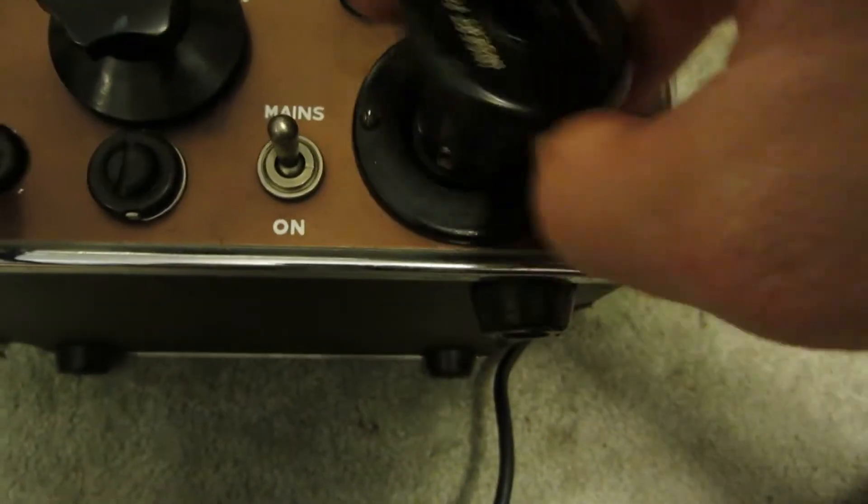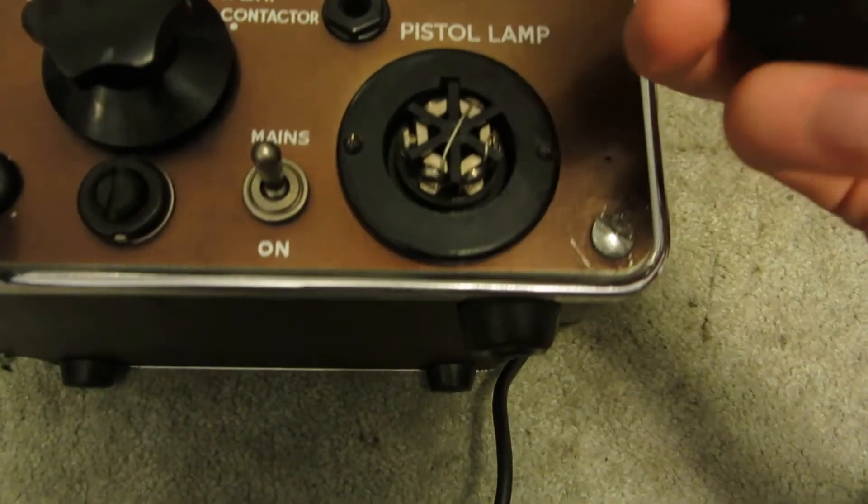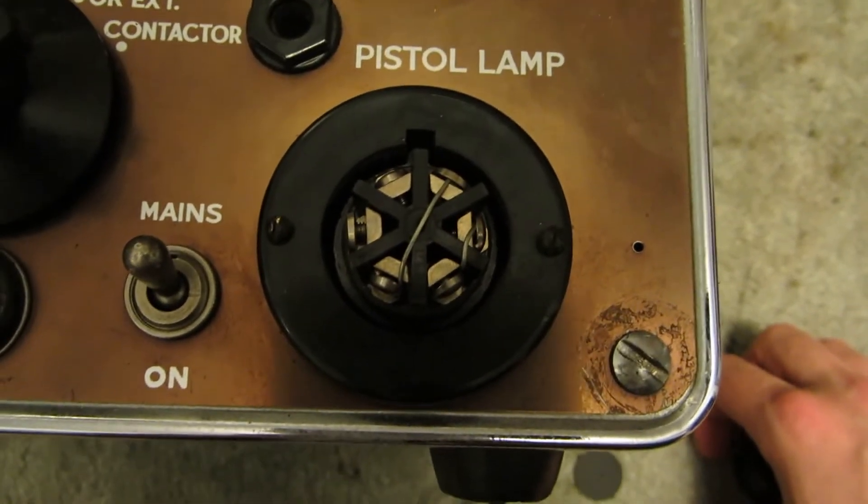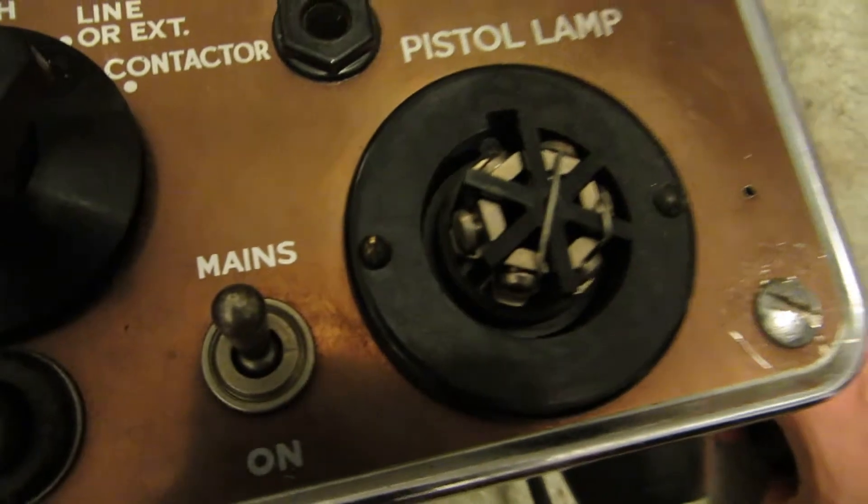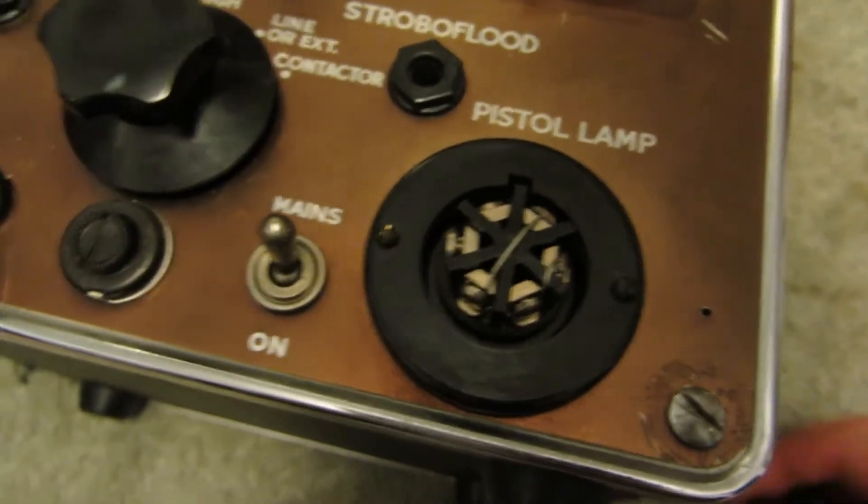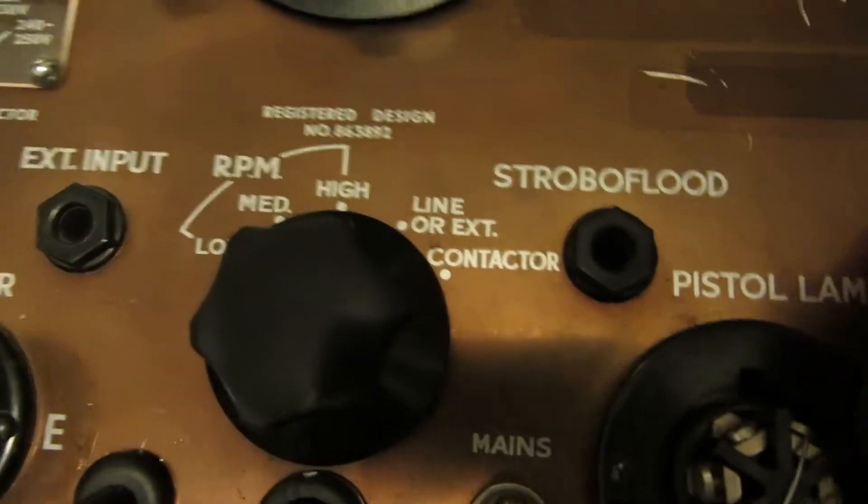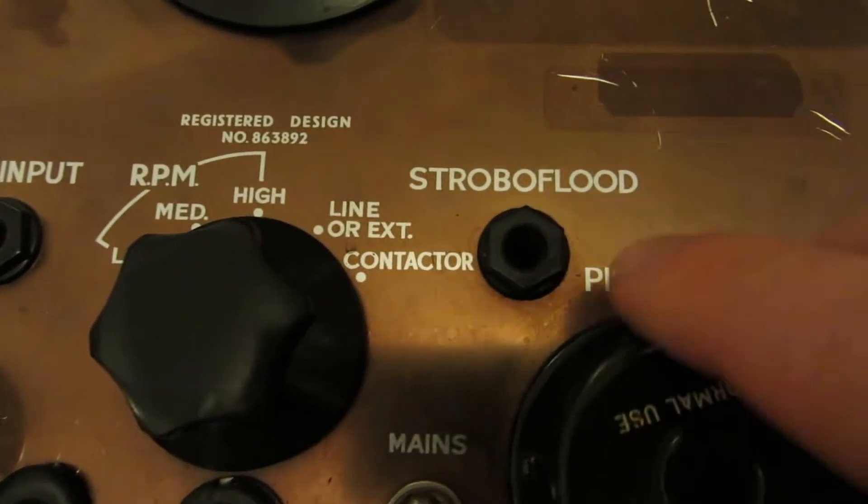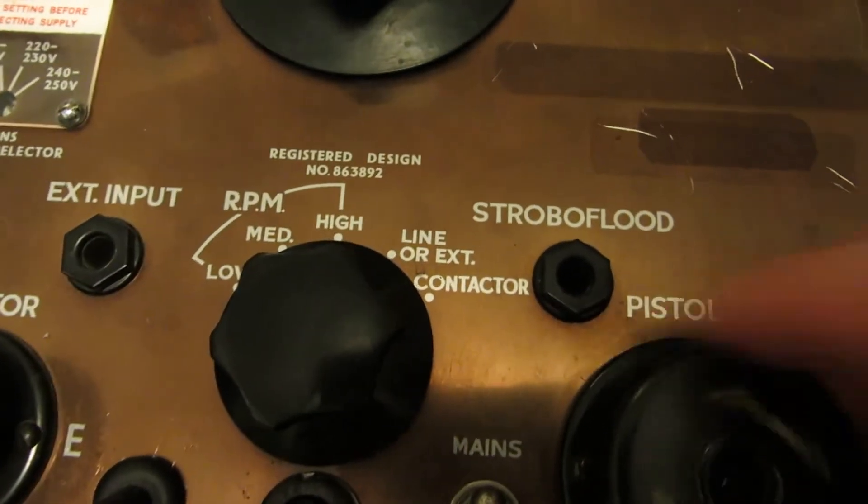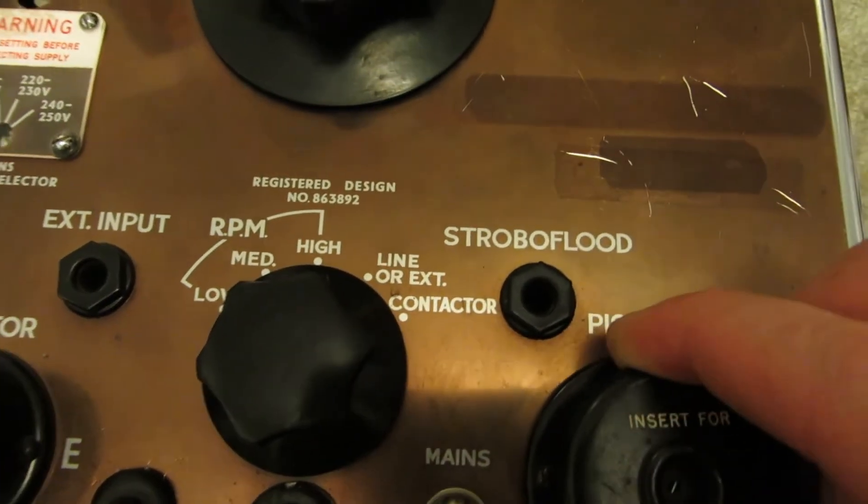If you look under this, I'm not exactly sure how it's supposed to work. There's a jumper going across a few of the screws here. You have a strobo flood. I have no idea what that even is. There's no book or any instructions at all that came with this thing.